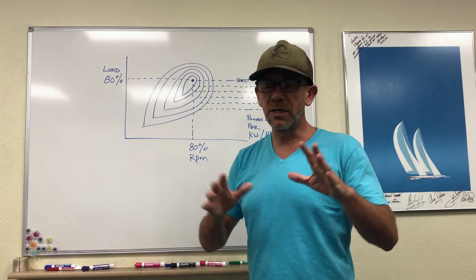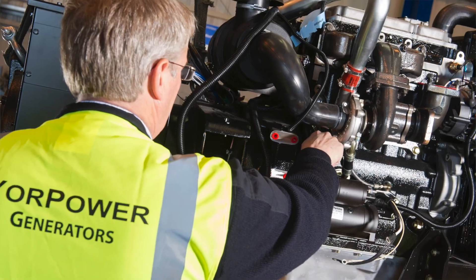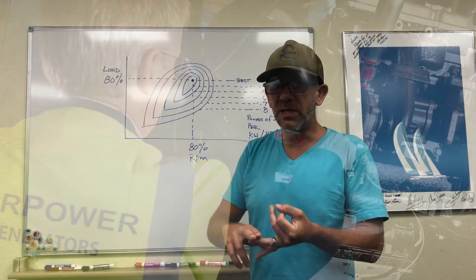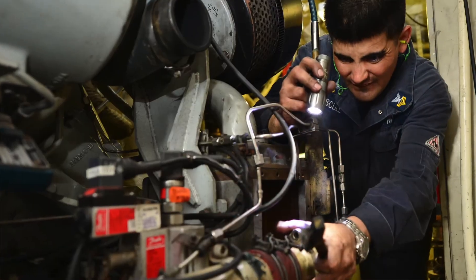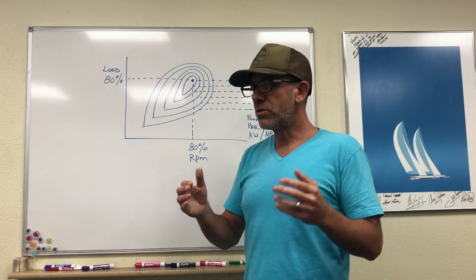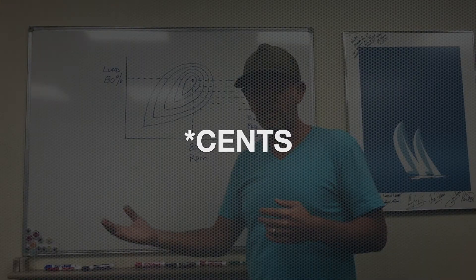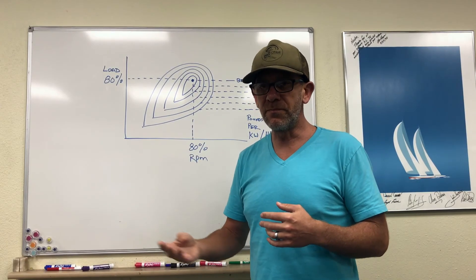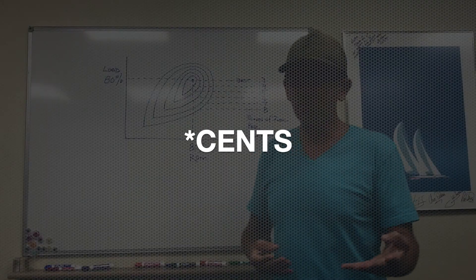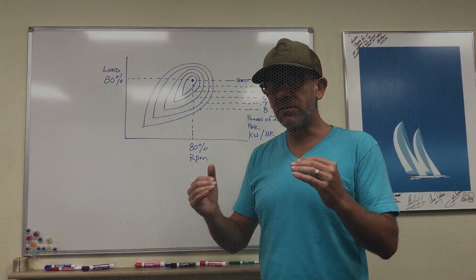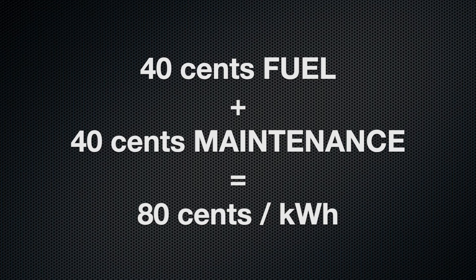What I know from looking at a lot of different scenarios is other expenses - the cost of equipment, the maintenance, the replacement - is going to be around another 40 cents. When you have the 40% of your maintenance and equipment plus the 40% of fuel in the very best scenario, that's how you get your 80 cents per kilowatt hour.